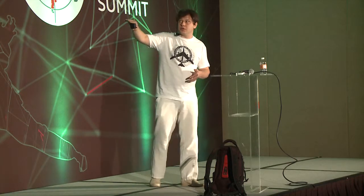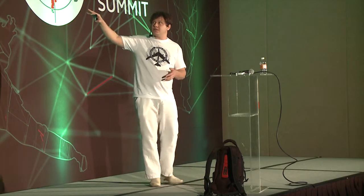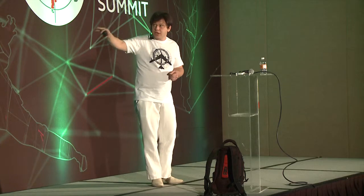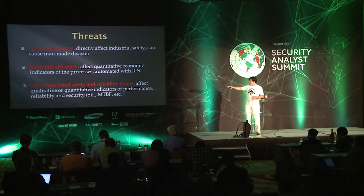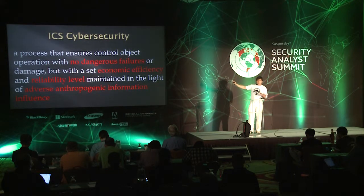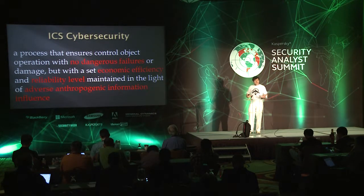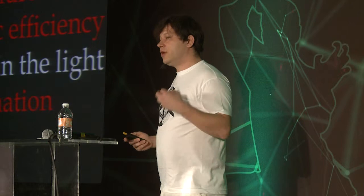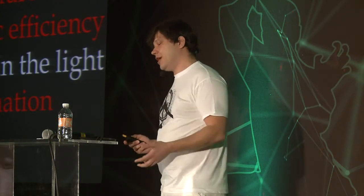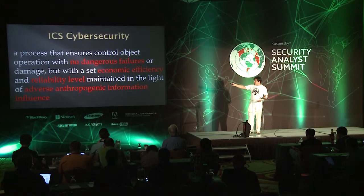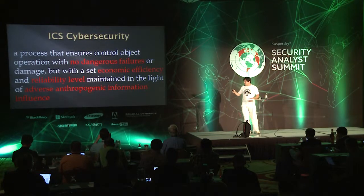We can separate three different ways threats affect ICS systems. First, industrial security: if a threat directly affects industrial safety, it can cause a man-made disaster. Second, economic efficiency. Third, reliability issues. This is my definition of cybersecurity for the ICS environment: we should not only keep confidentiality, availability, and integrity — we should protect against dangerous failure, maintain economic efficiency, and maintain reliability level.